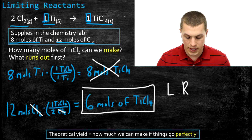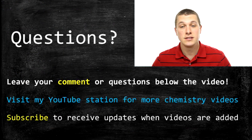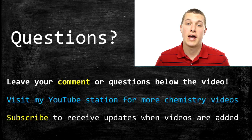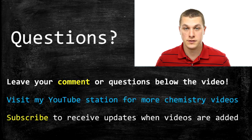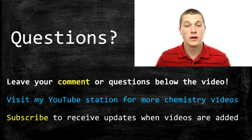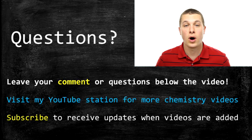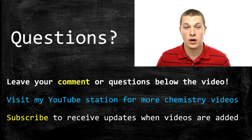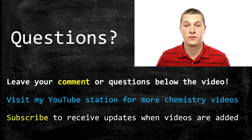In this video, we've introduced limiting reactants and theoretical yield. The limiting reactant is the ingredient that runs out first, and theoretical yield is how much product we can make if everything goes perfectly. We've also worded these problems casually, so I recommend watching my video on limiting reactants practice problems, where we'll use the language you'd see in a chemistry textbook. If you have any questions, leave them below, and you can subscribe to receive updates about future videos.